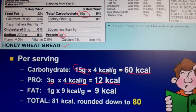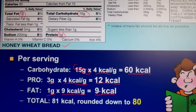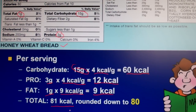The last thing is fat. Our total fat is 1 gram. Fat is different from carbohydrates and proteins because fat has 9 kilocalories per gram. Since we only have 1 gram, that's an easy calculation — it's just 9 kilocalories. So if we add 60 plus 12 plus 9, that comes out to 81 kilocalories total.